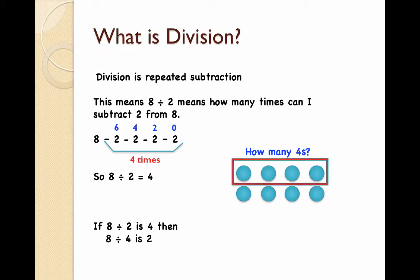If I want to know how many 4s there are, I'll count 1, 2. There are 2 groups of 4, showing that both of those ways of writing 8 divided by 2 and 8 divided by 4 are correct.